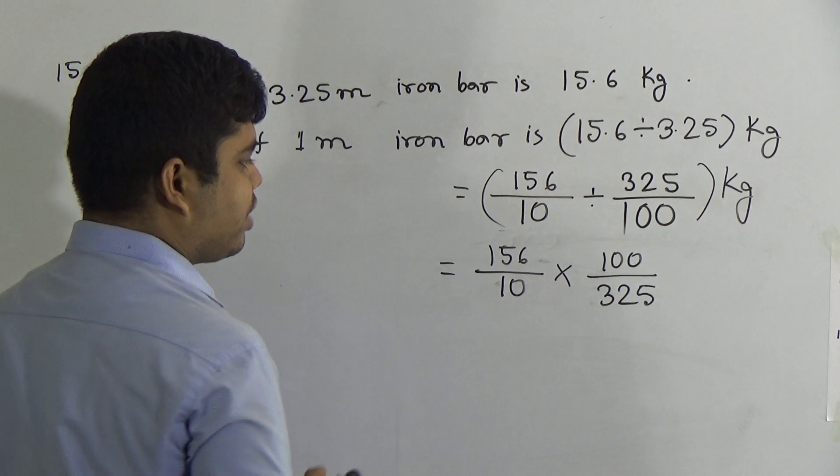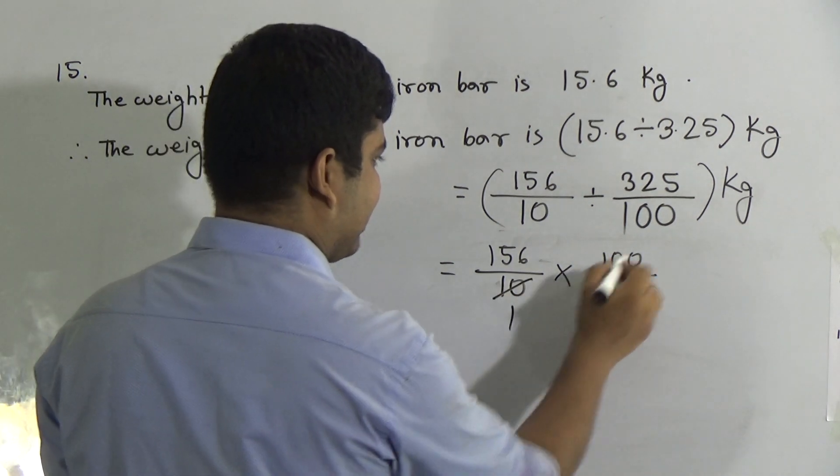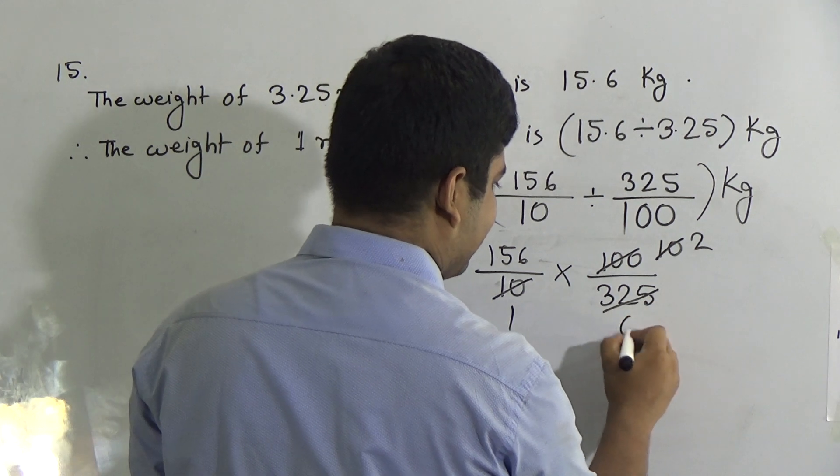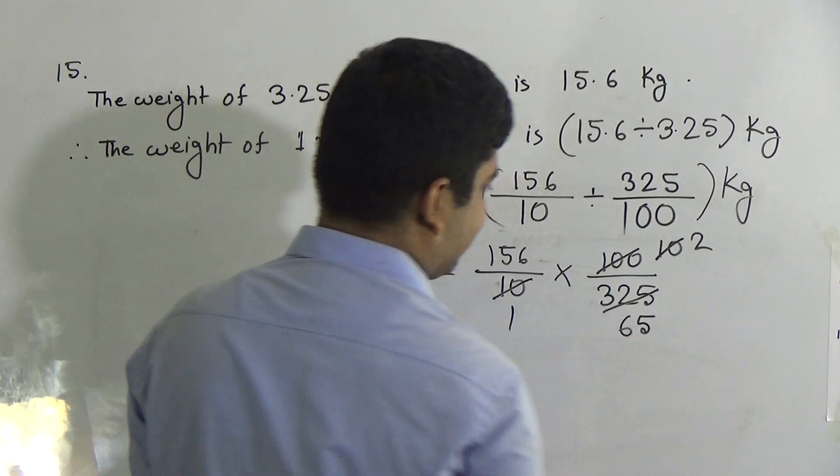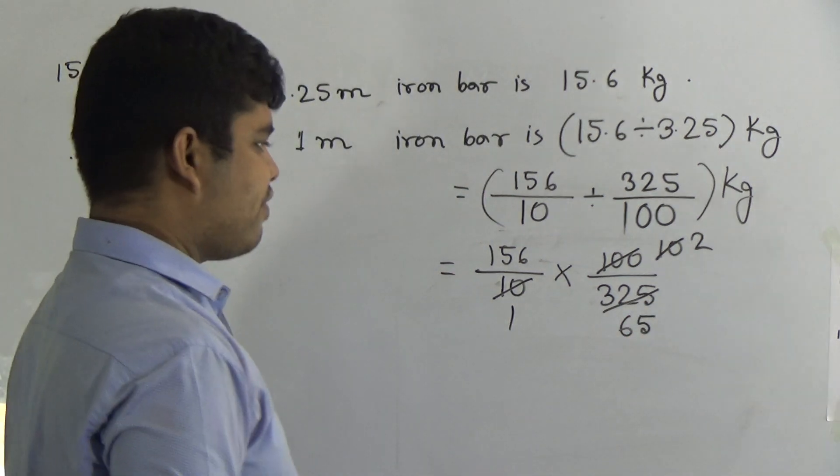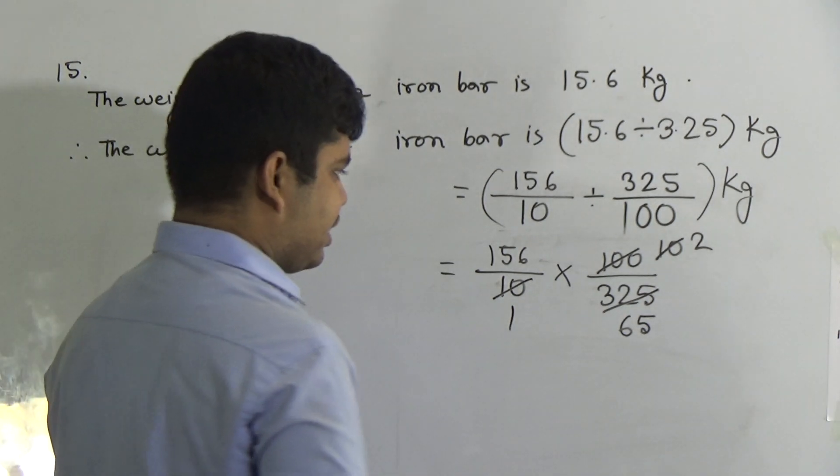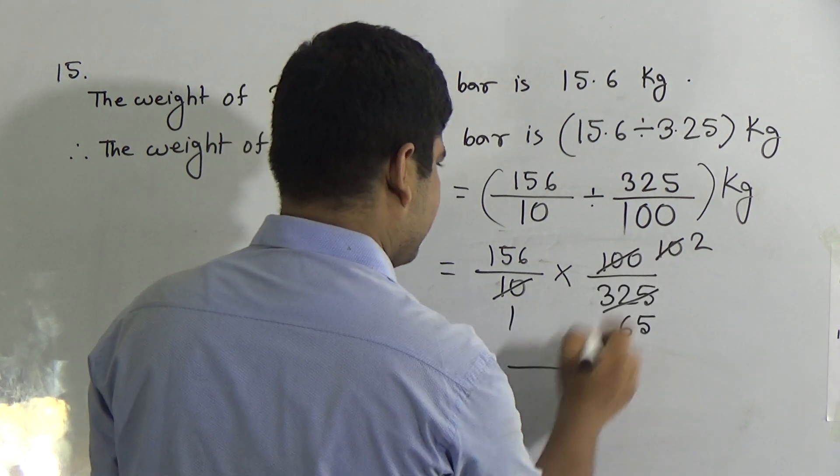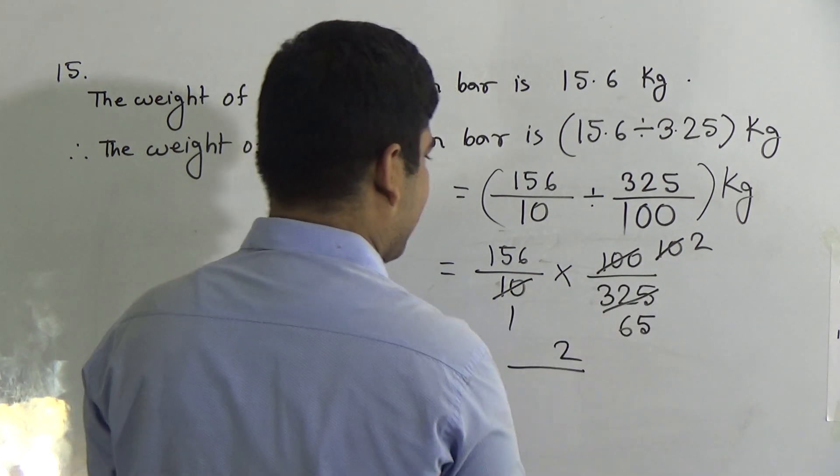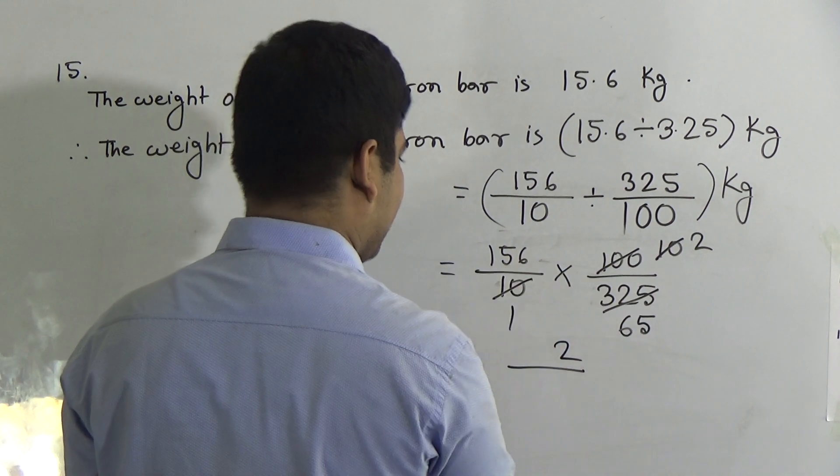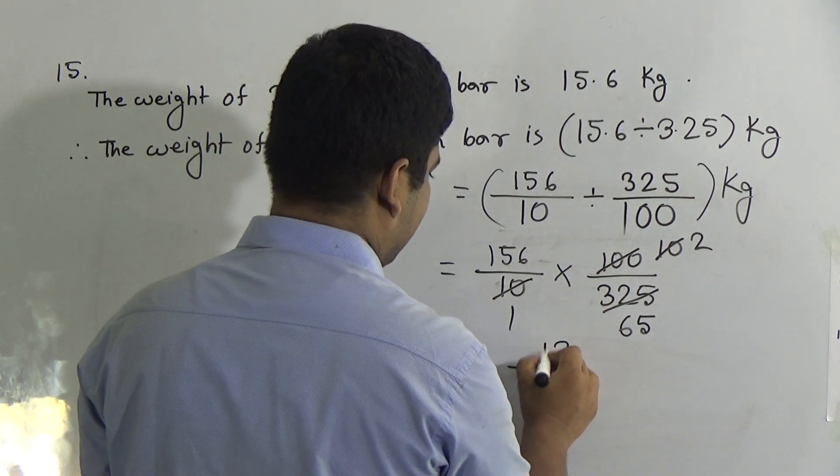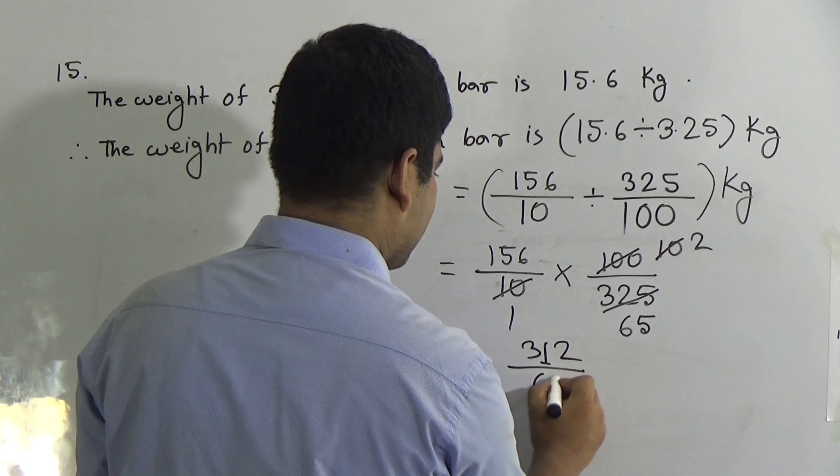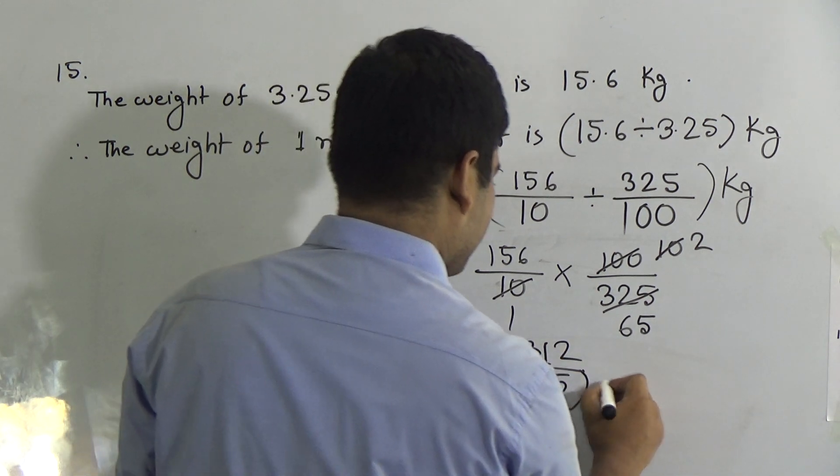So we write this number without point, that means in fractional process. Then 156 by 10, because per point we write here 1, and after point there is only 1 digit, so 10. Then 156 by 10 multiplied by 100 divided by 325. Now my students, we cut 10, 10 ones are 10 and 10 tens are 100. 5 twos are 10 and 5 sixes are 30, 5 fives are 25.